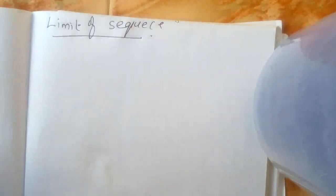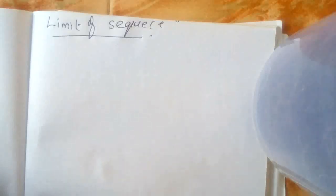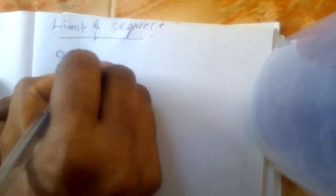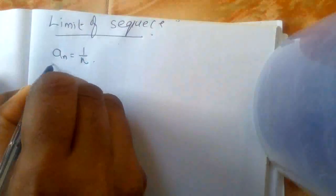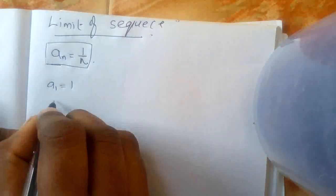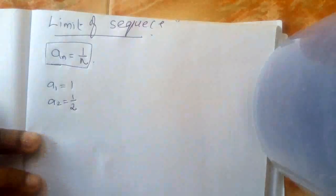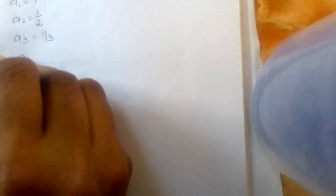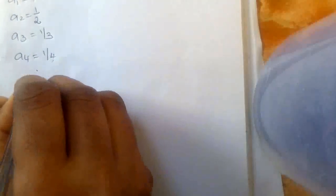Hi, today I will teach about what is the limit of a sequence. I already said what is a sequence; here we will discuss what is the limit of a sequence. We can take one sequence: a_n equal to 1 by n, so a_1 equal to 1, a_2 equal to 1/2, a_3 equal to 1/3, a_4 equal to 1/4, and so on.